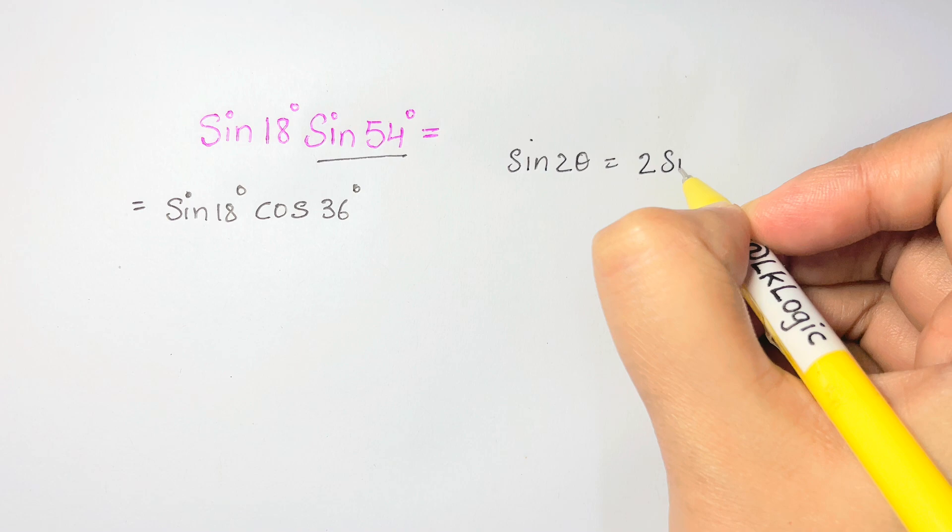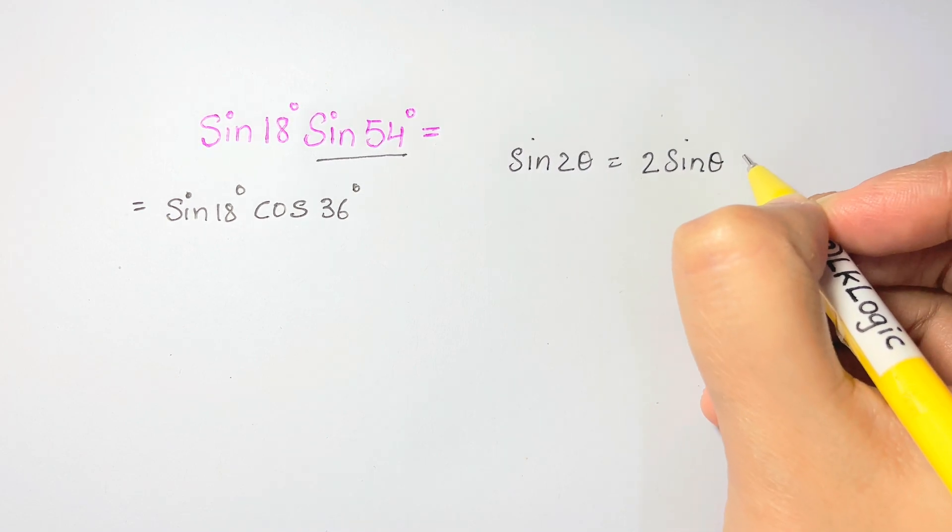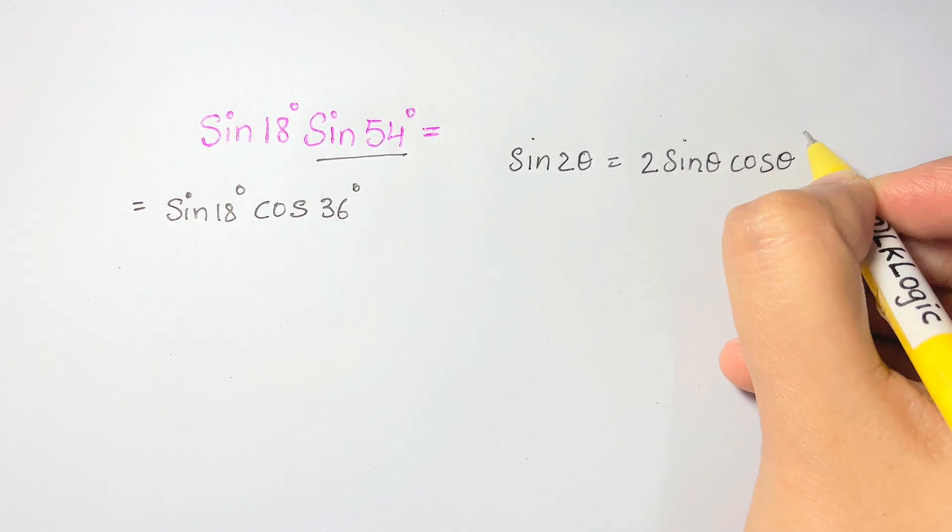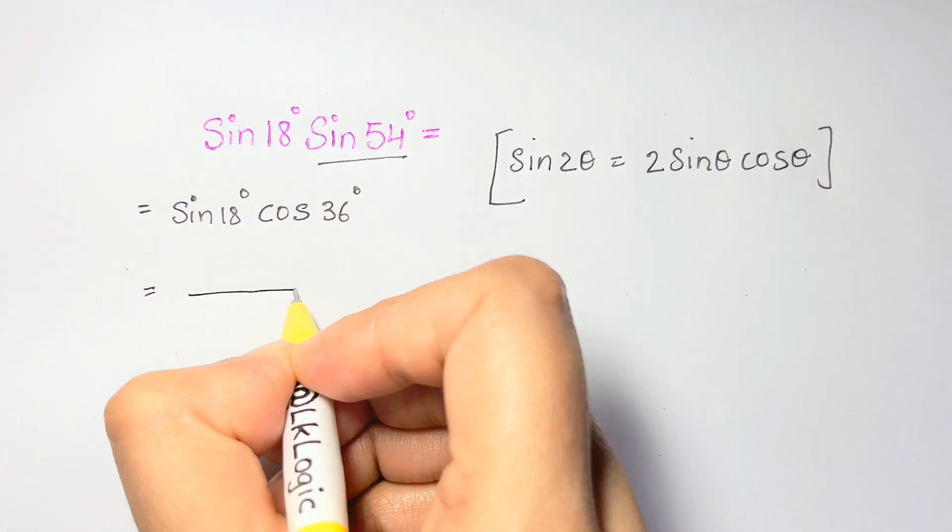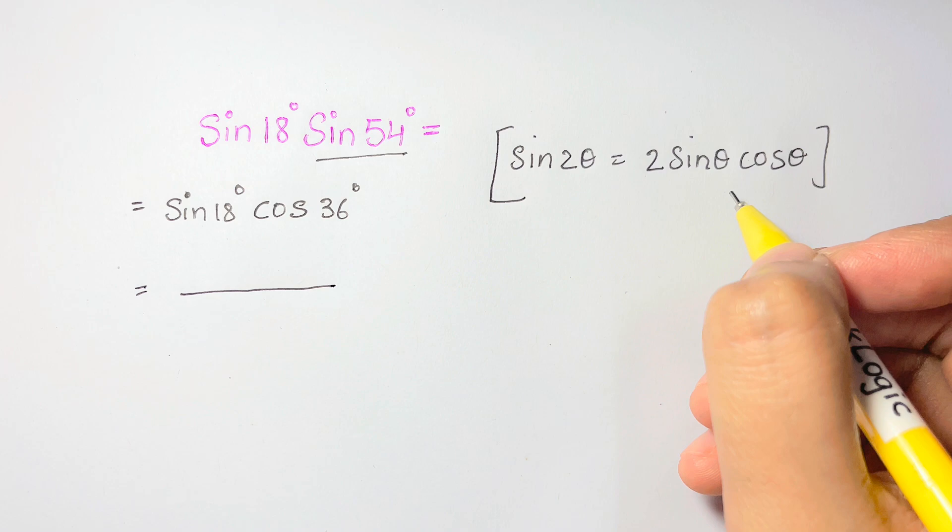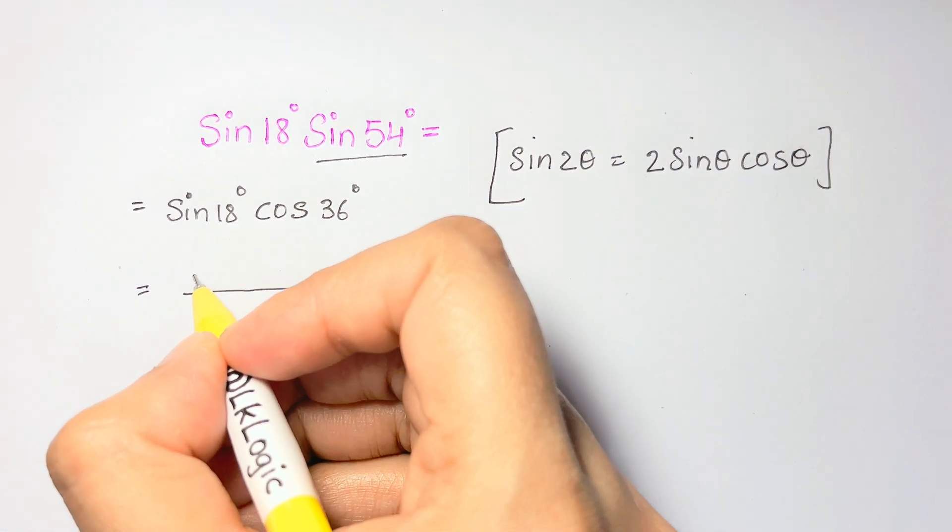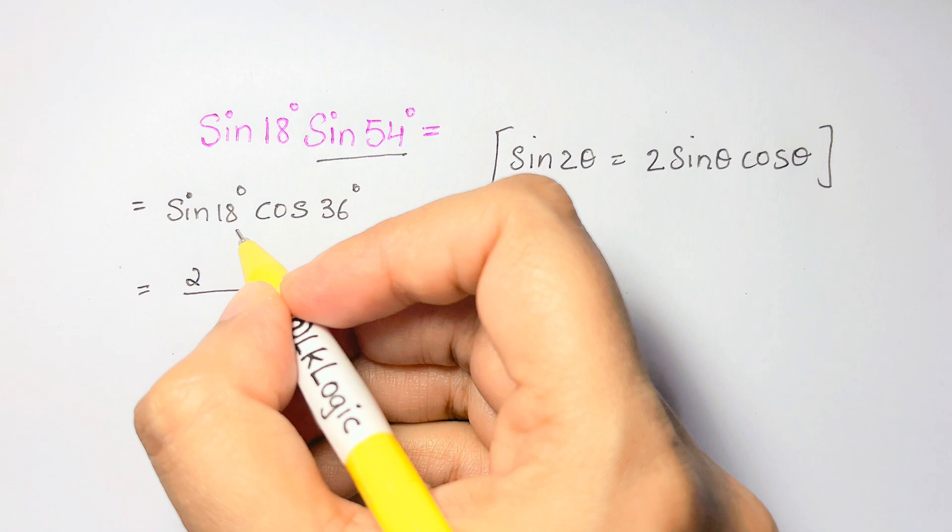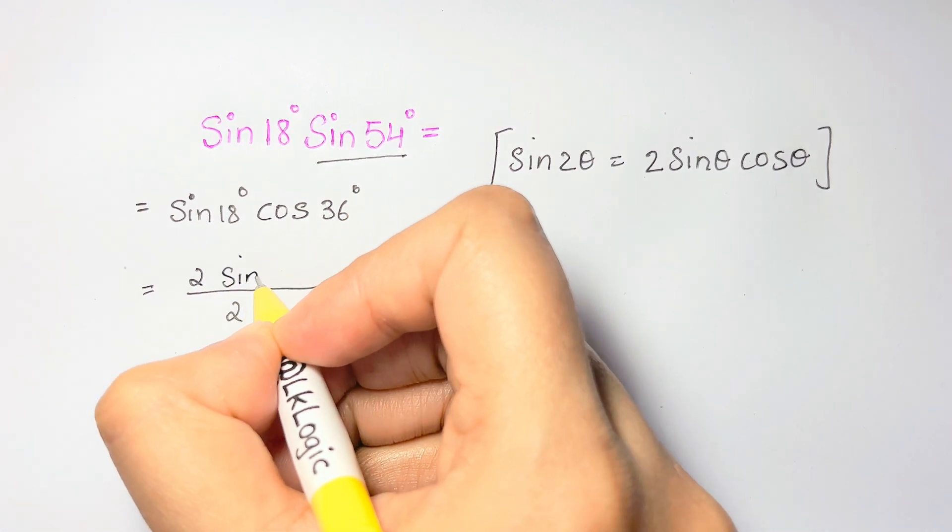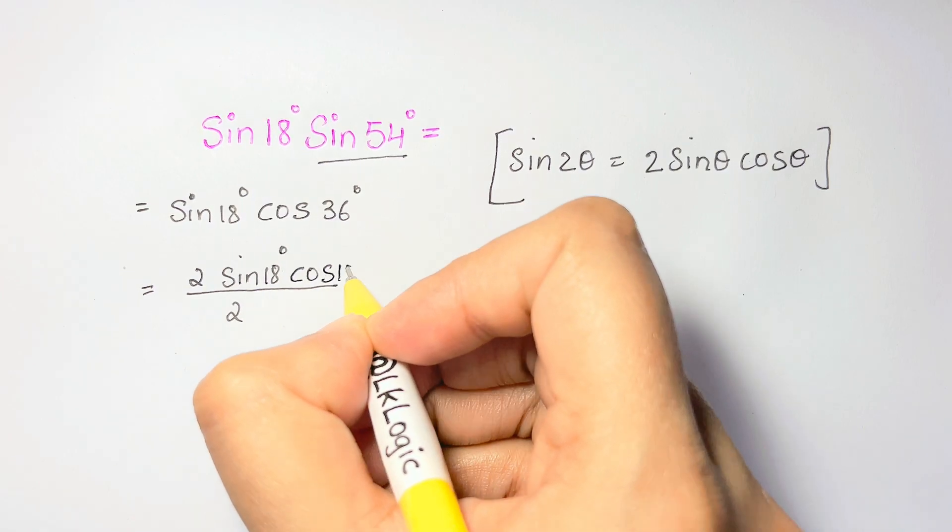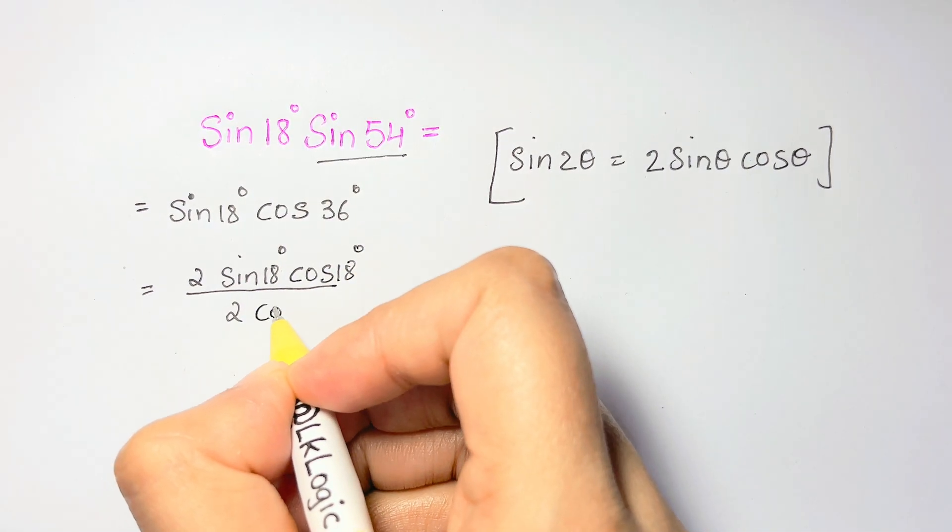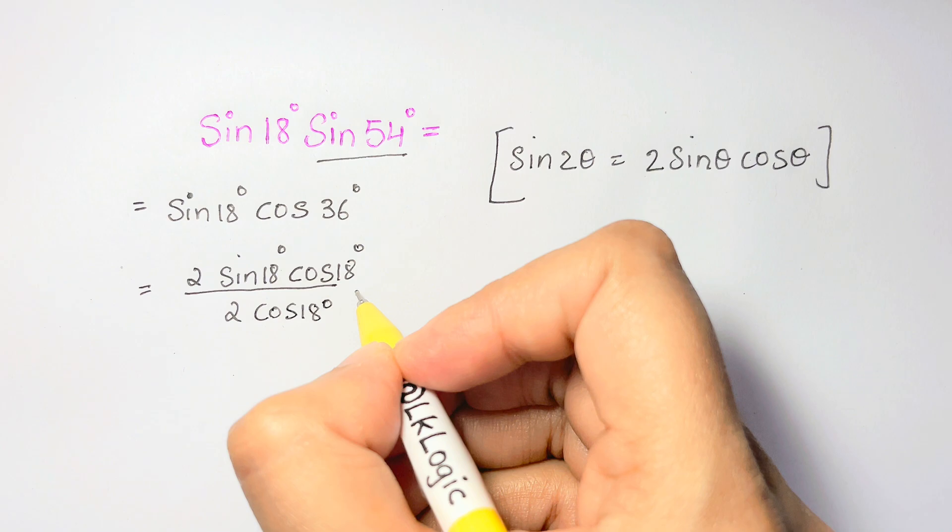So we have sine 2 theta equals 2 sine theta cos theta. So we are going to apply that. But how can we apply when we don't have 2 and cos theta? So we are going to take 2 in numerator and denominator, then put sine 18 degrees, and then put cos 18 degrees. As you have put cos 18 degrees at top, you have to put it at the bottom as well.